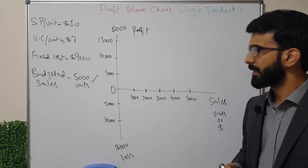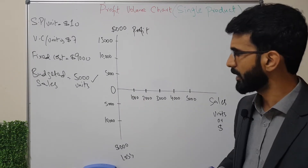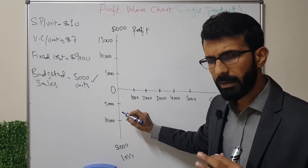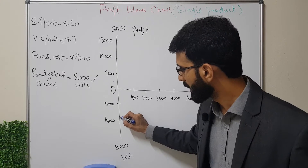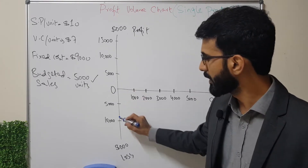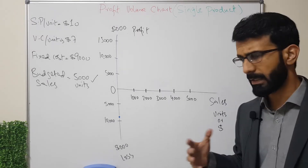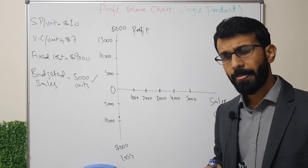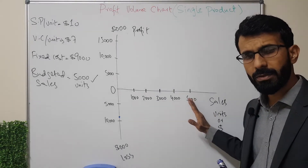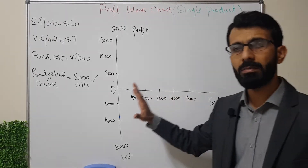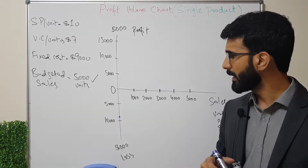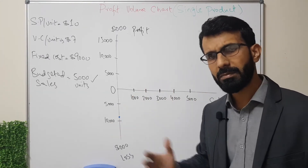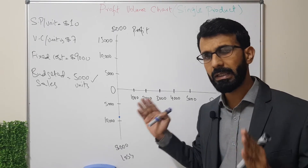If the volume of production and sales is zero, we stand at a loss of $9,000 — approximately close to $10,000 on the graph. That is the worst-case scenario. The best-case scenario is the maximum units sold, which is 5,000. If we sell 5,000 units, we calculate how much profitability we can generate.